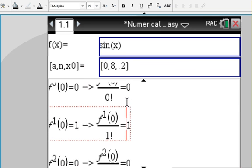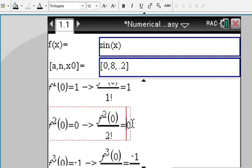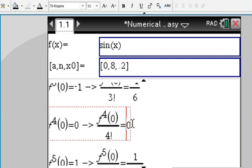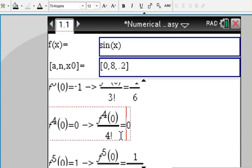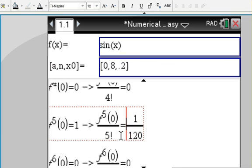For sine of x, we find the coefficients to be all either zero, one, or negative one. Dividing by the factorials as the formula calls for, we're going to get 1/6, zero, 1/120. Obviously this is an odd function, so we're only going to get the odd coefficients for the Taylor polynomial.